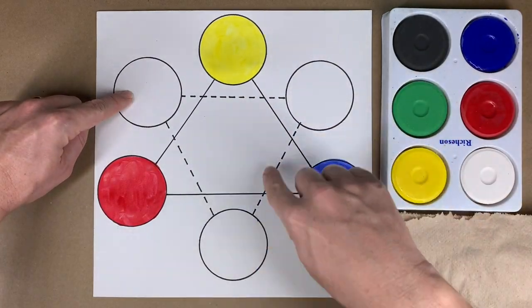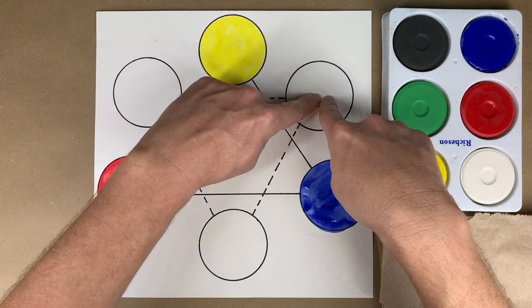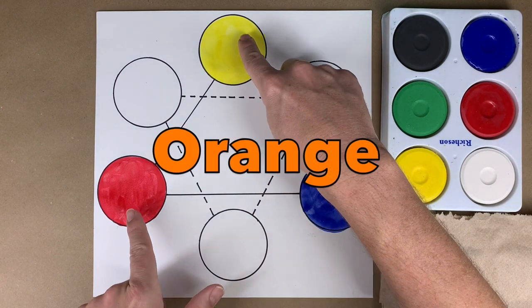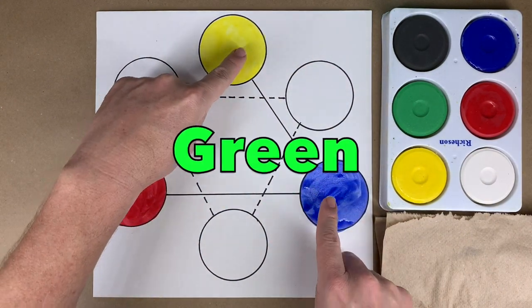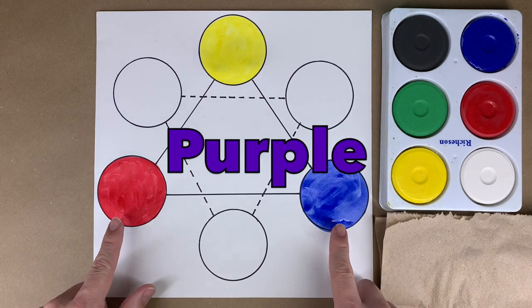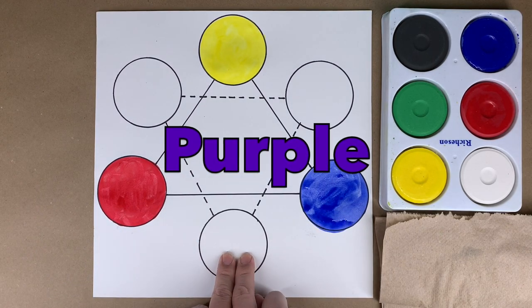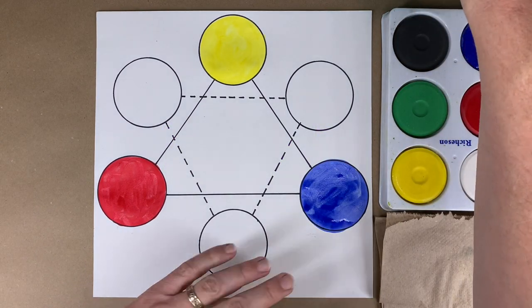Now it's time to make my secondary colors, the colors that these two make. So yellow and red are going to make orange. Yellow and blue will make green. And down at the bottom, red and blue are going to make purple or violet. So I'm going to mix them.